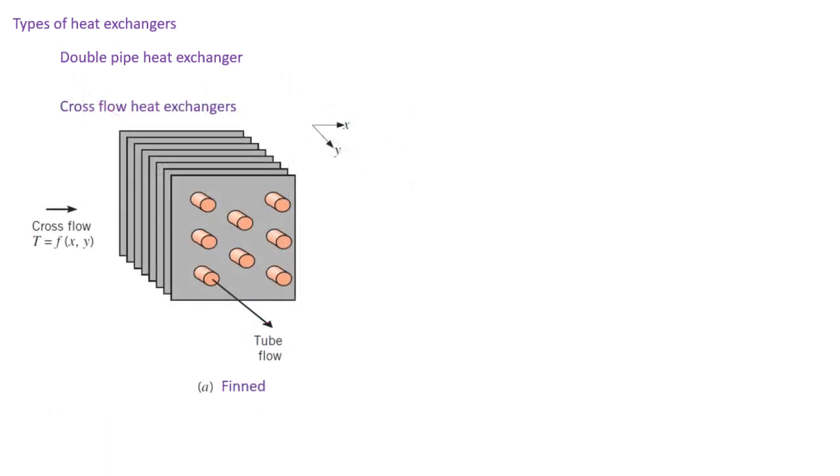Cross flow heat exchangers involve flow over tubes. Those tubes may have fins, which have the result of increasing heat transfer, but also limits the direction of flow to only the x direction. And that means, as indicated in our figure here, at different y locations between different fins, the fluid temperature will vary.